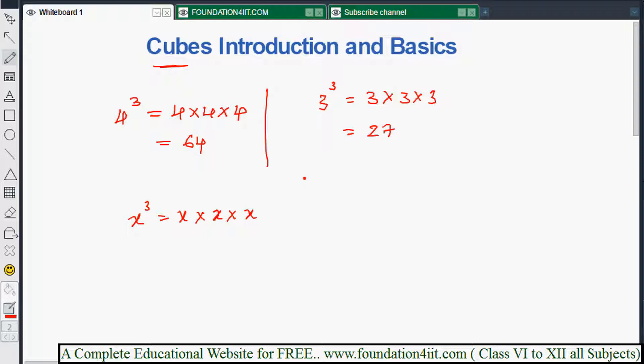Now, 1 cube equals 1 itself. Because 1 multiplied any number of times will give you only 1, so 1 cube is just 1. Similarly, you can find out cubes of other numbers.